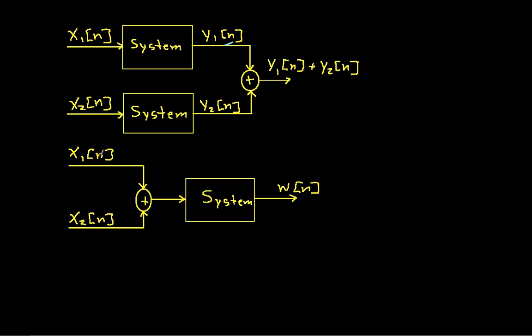So let's just see if this one does. We say that y1 coming out in response to x1, y1 will be x1[-n], because all our system does is change the sign of n. y2 will be x2[-n]. Which means that y1[n] plus y2[n], this will be y1 is x1[-n]. y2 is x2[-n]. So on the bottom row, we put in x1[n] plus x2[n]. This is what goes into the system.